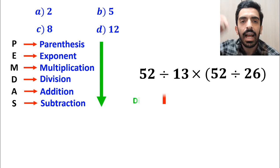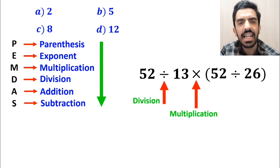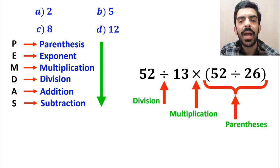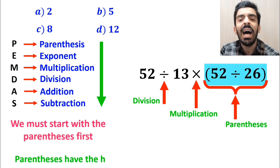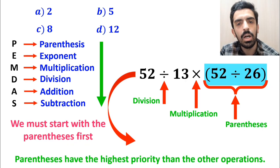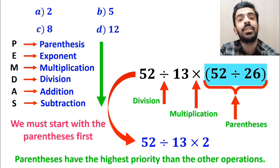Alright, as you can see in the image and this expression, first we have a division sign, then a multiplication sign, and finally parenthesis. According to the PEMDAS rule, we must start with the parenthesis, because parenthesis have the highest priority compared to the other operations. So, we rewrite this expression as 52 divided by 13 multiplied by 2.